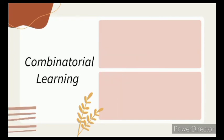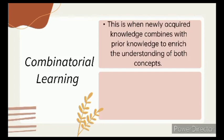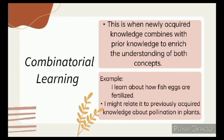And the last one here is the Combinatorial Learning. Combinatorial Learning is where when newly acquired knowledge combines with prior knowledge to enrich the understanding of both concepts. For example, I learned about how fish eggs are fertilized. I might relate it to previously acquired knowledge about pollination in plants. Both of the ideas are different, but they are related to the process of breeding. You could think of this as learning by analogy. And now we are done with the four processes.